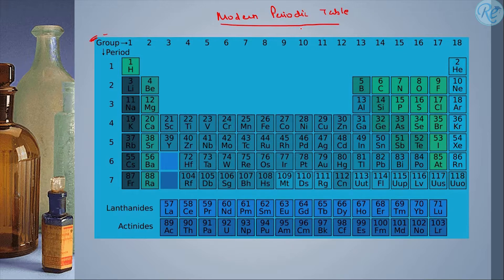So, here the modern periodic table consists of 118 elements that are present as of now.